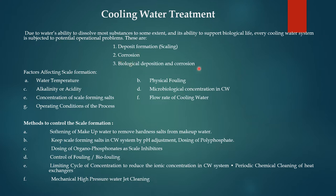Factors affecting scale formation are: water temperature, alkalinity or acidity, concentration of scale-forming salts, operating condition of the process, physical fouling, microbiological concentration in cooling water, and flow rate of the cooling water. These are all the factors affecting scale formation. The methods to control scale formation include softening the makeup water to remove hardness salts.